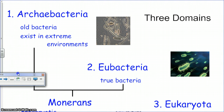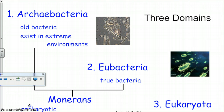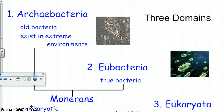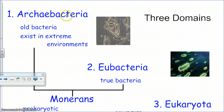Of all the living things that exist, we are able to break them up into basically two or three groups. The three-domain way of classifying all living things uses the method of three domains. The three domains are archaebacteria — where 'archae' means old, so old bacteria — eubacteria, which means true bacteria, and then the eukaryotes, or Eukaryota. All living things on Earth fit into one of these three groups, which are considered to be domains.